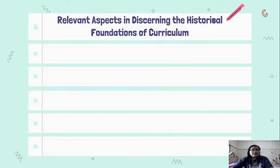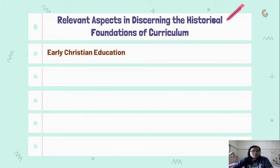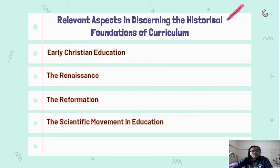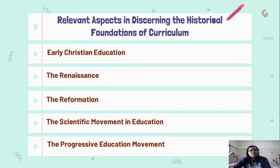With that, let us now move on to the relevant aspects in discerning the historical foundations of the curriculum. Here are the five relevant aspects: early Christian education, the Renaissance, the Reformation, the scientific movement in education, and the progressive education movement.